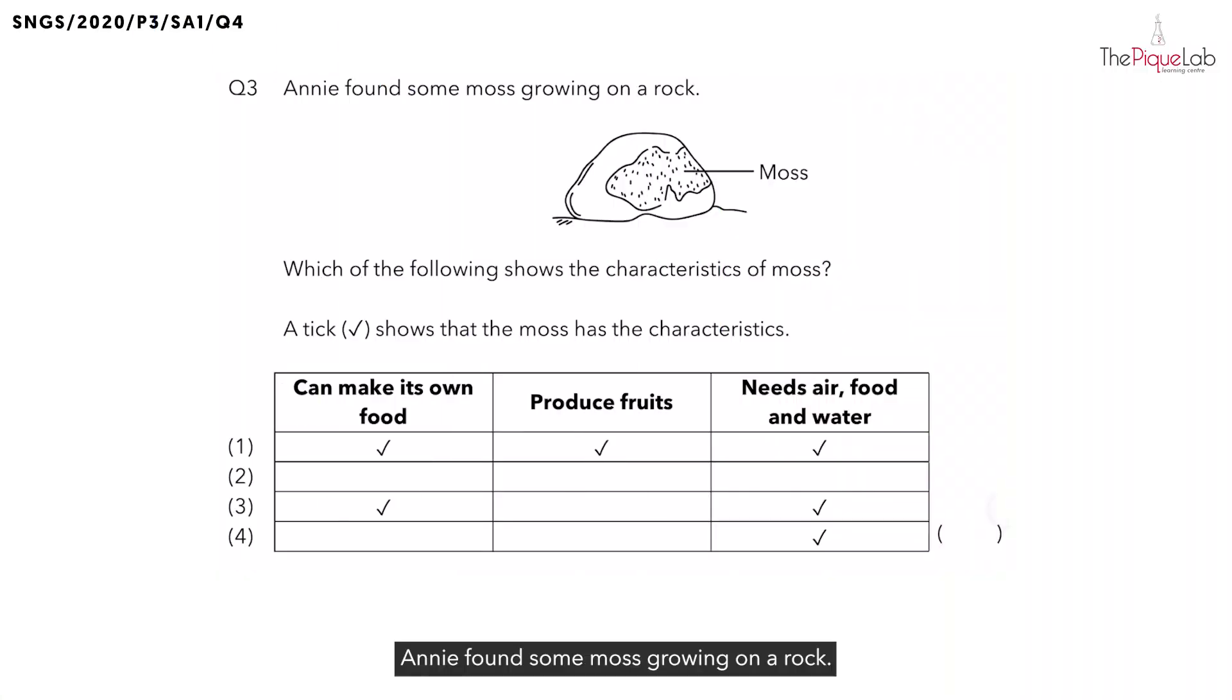Question 3. Annie found some moss growing on a rock and they want us to find out which of the following shows the characteristics of moss. And they said that a tick shows that the moss has that characteristic.